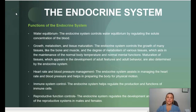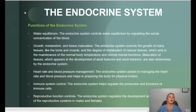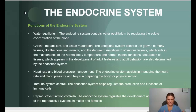Functions of the endocrine system: one is water equilibrium — the endocrine system controls water equilibrium by regulating the solute concentration of the blood. Also, the endocrine system is responsible for growth, metabolism, and tissue maturation. It helps to control tissues like bone and muscle and the degree of metabolism of various tissues, which helps maintain normal body temperature and normal mental functions.